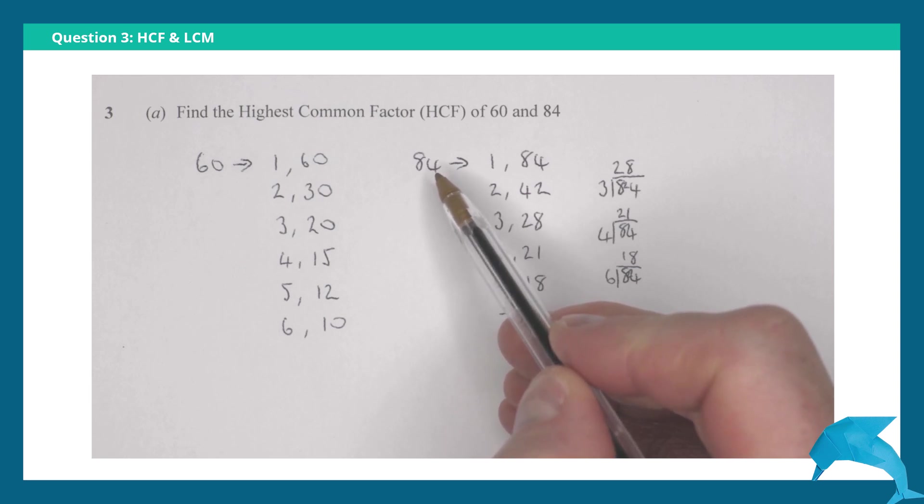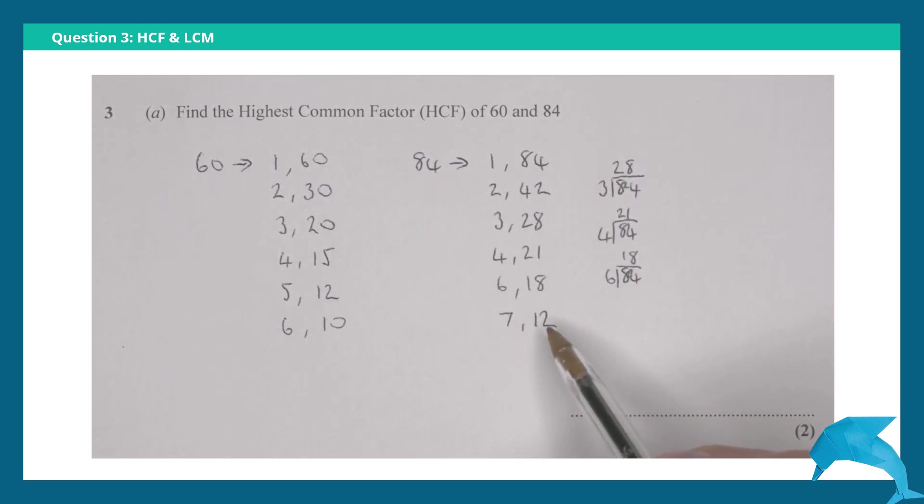We cannot get 84 in the 8 times table, 88 for the 11 times table. And then 12 would be a repeat, 12 is here. These are the factors of 84.